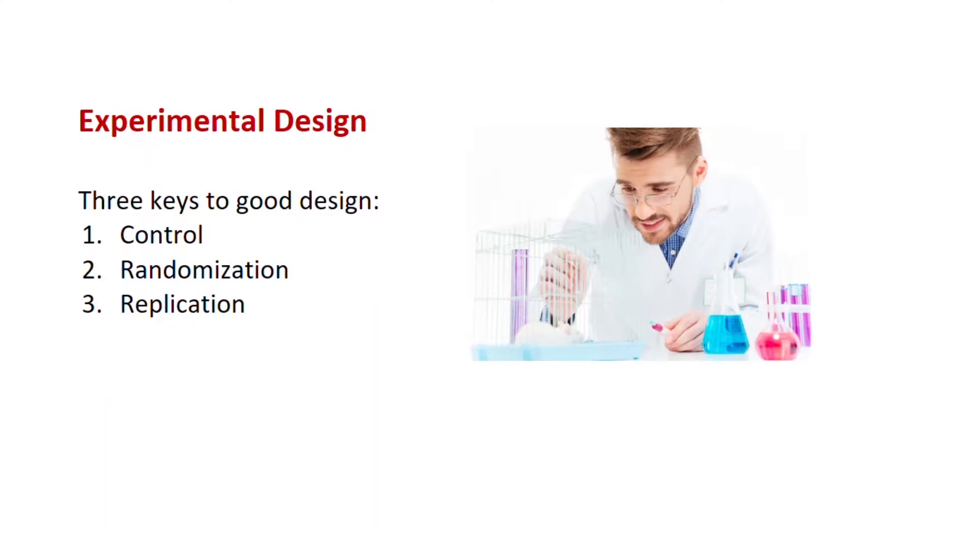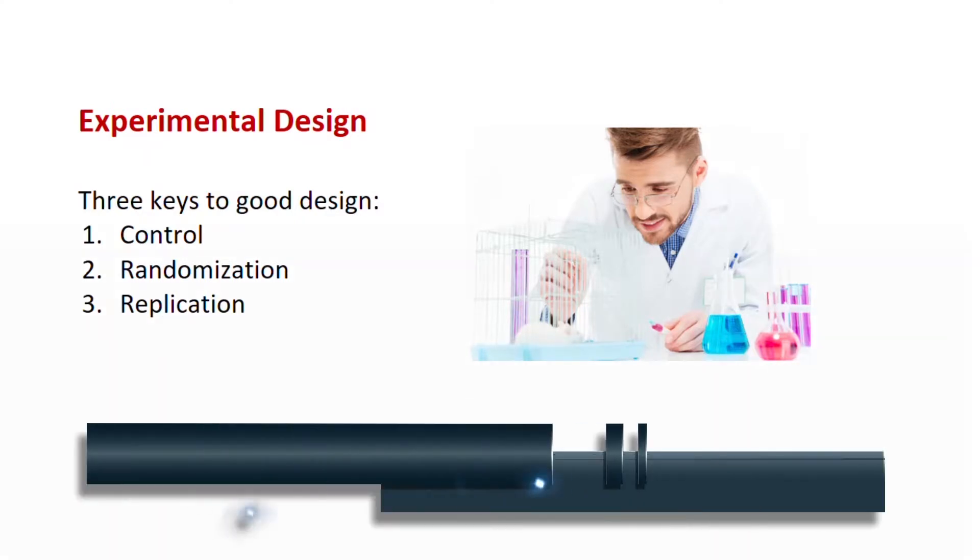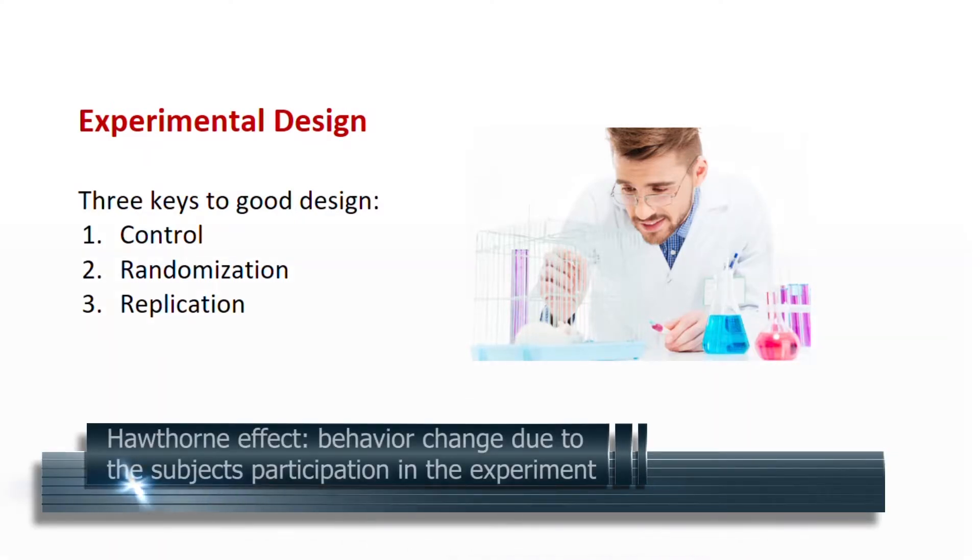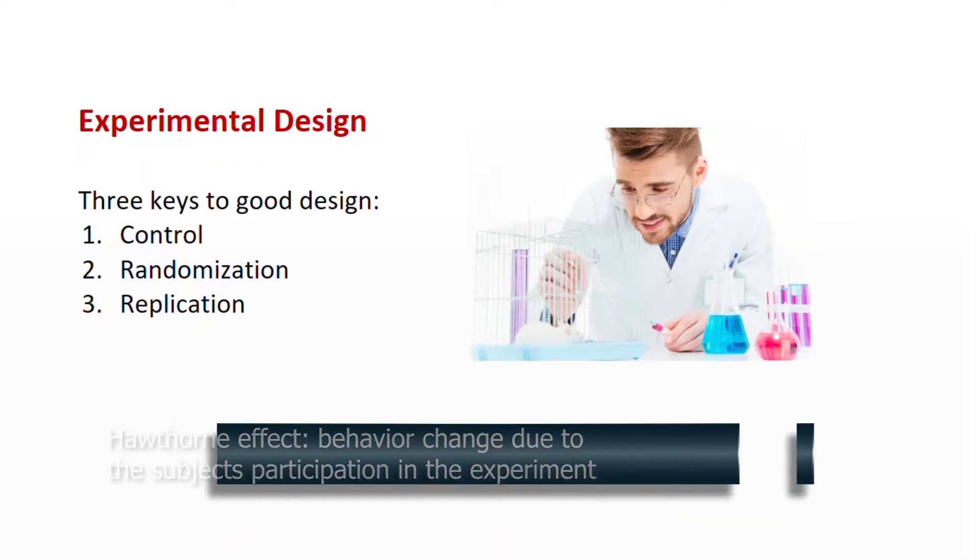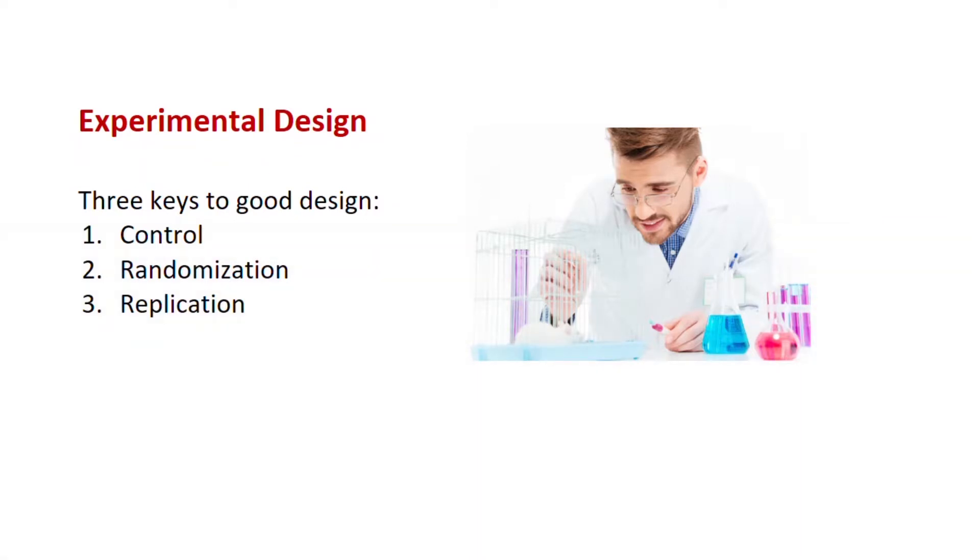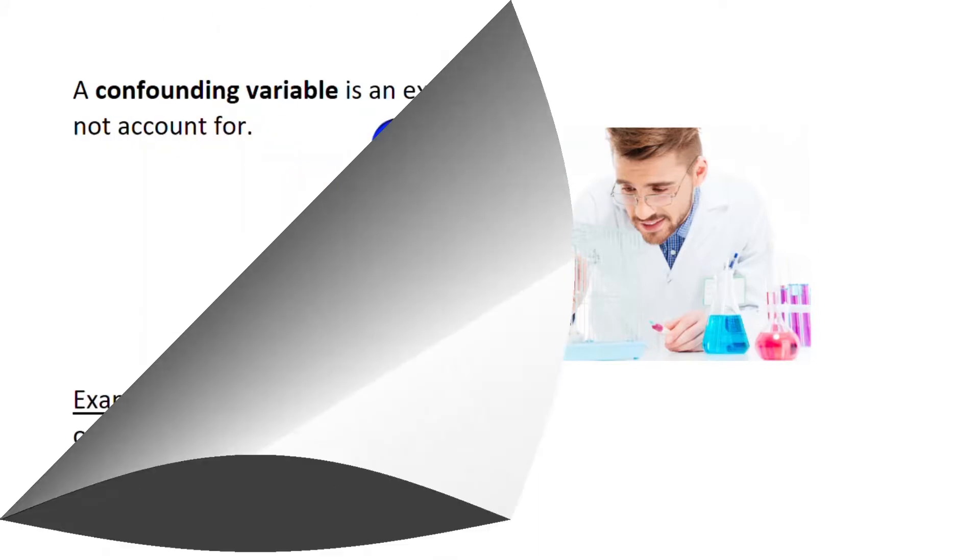Experiments have to be very carefully designed and executed. A lot of things can unwittingly influence the result. Sometimes just the very fact that subjects are in a study changes their behavior. This is called the Hawthorne effect. So there's three key ideas for good design or processes: you want to make sure you have a control group, you want to have randomization, and replication.